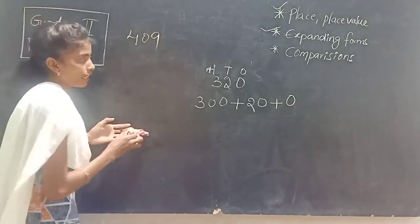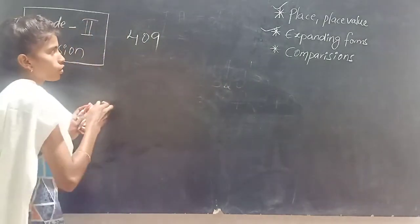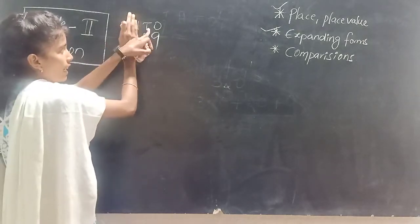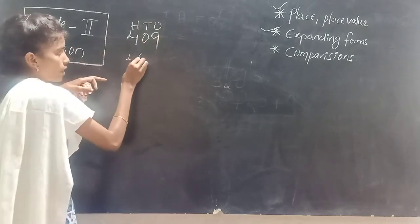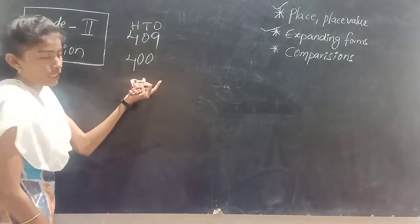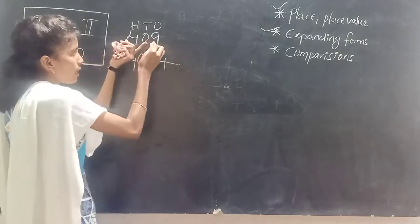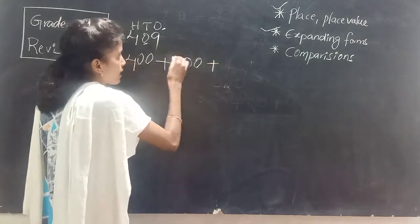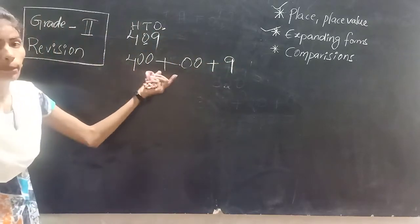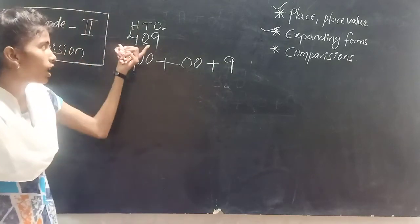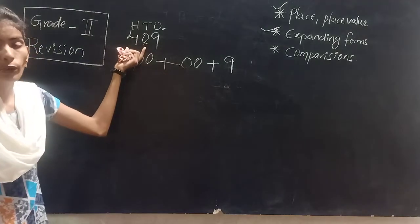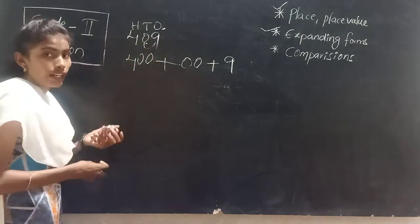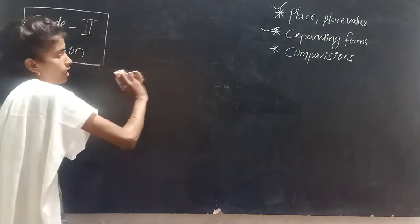For example, 409. Ones, tens, hundreds. First we take the first number 4. After 4 we have tens place and ones place, so two zeros — 400. Plus next, the tens place value is 0. After tens place, ones place becomes 0 more — so we put one more 0, giving 00. Plus the ones place value number is 9. So 400 plus 0 plus 9 is the expanded form for 409. Take the first number and keep as many zeros as digits you have after that number — this is all very easy.